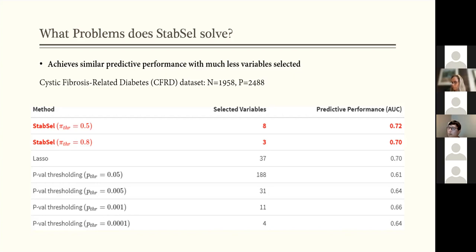At the same time, it outperforms the conventional p-value thresholding, which tends to select too many variables when the effect sizes are moderate.